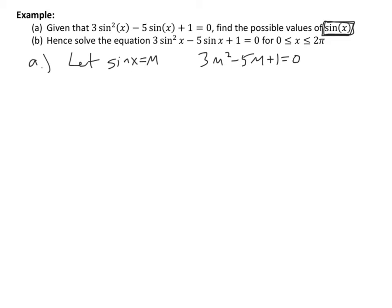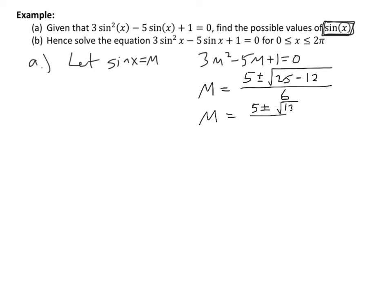Factoring won't work here and I don't want to do completing the square with that leading coefficient of 3, so I'll use the quadratic formula. That gives m equals (5 ± √(25 − 12)) / 6, which simplifies to m equals (5 ± √13) / 6. So there are two possible values: m equals (5 + √13)/6 or m equals (5 − √13)/6.